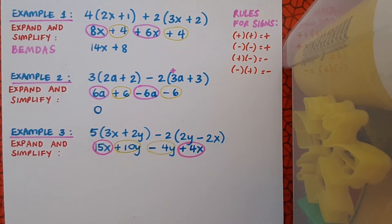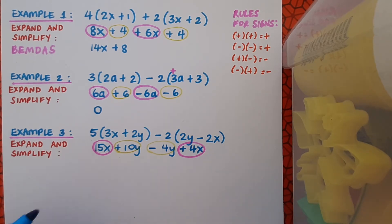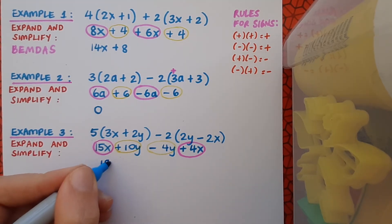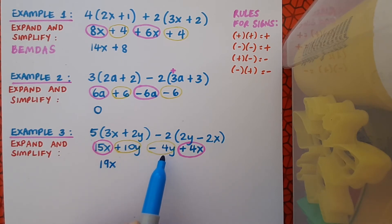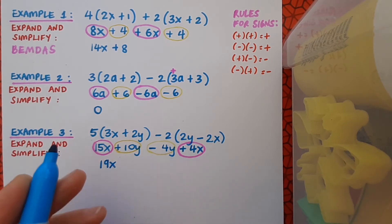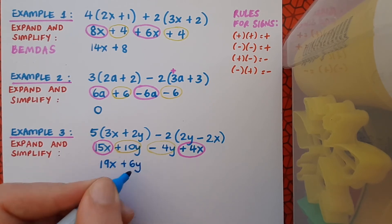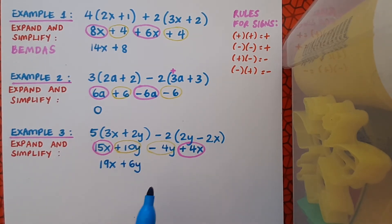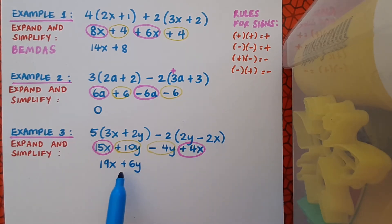Now I need to tidy up. So I identify my like terms and then I simplify. 15x plus 4x is going to give me 19x. And plus 10y minus 4y is going to give me what? That's going to give me plus 6y. Don't fall into the trap of using these rules to work out the solution for the plus 6y. These are the rules for multiplying signs. But here, I'm just adding 10 and subtracting 4 to get to plus 6. My solution for example 3 is 19x plus 6y.